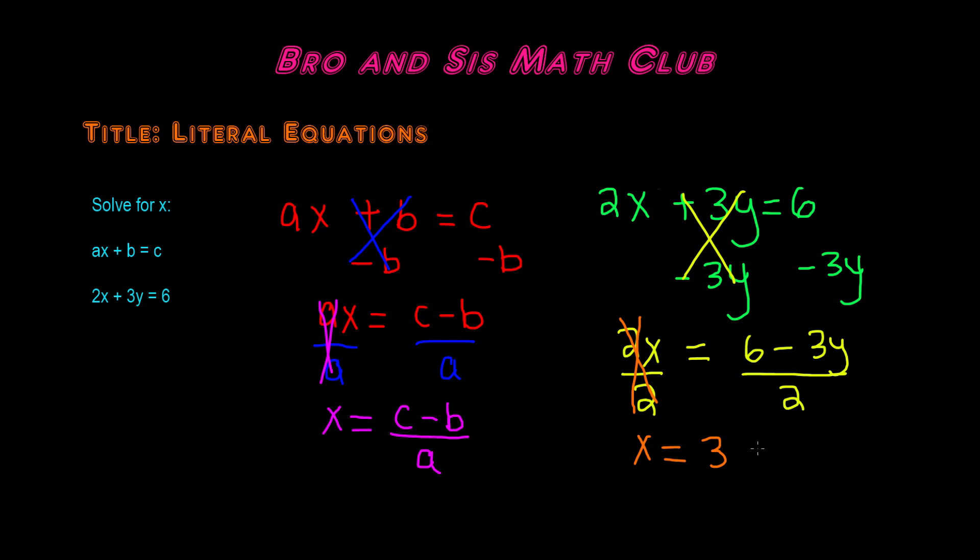The minus 3y over 2, a negative divided by positive is always a negative and 3 divided by 2 will stay as it is. So it would be 3 over 2 and it's 3y. So 3 minus 3y over 2. So this is the simplified answer to our literal equation.